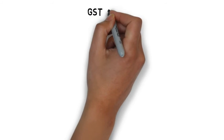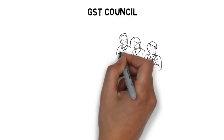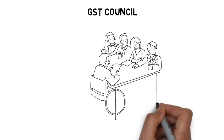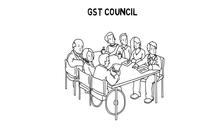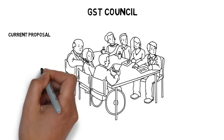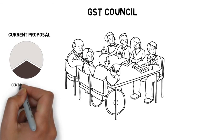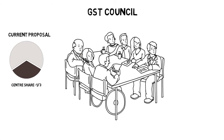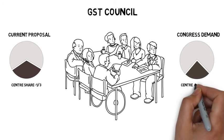The GST will be administered by GST council, which shall take key decisions regarding rates and products to come under GST. While making any such decisions, the centre will have its share in voting strength as one-third, while states comprising of two-thirds of the voting strength in the council. Congress wants the centre's share in voting strength to be reduced to one-fourth.